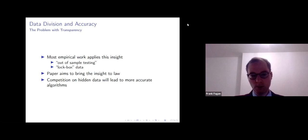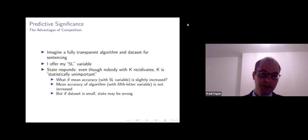So let me handle a few immediate objections. So imagine if there were no competing algorithms, and we follow the transparency policy prescription, and we have a fully transparent algorithm and data set for sentencing that I'm able to see. I offer the fifth letter of my name variable, and I show that because I have this letter K, I'm not going to recidivate. And the state easily responds that, even though nobody with the K fifth letter variable recidivates, K is statistically unimportant.